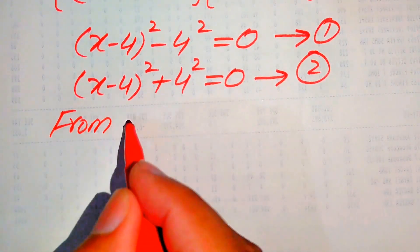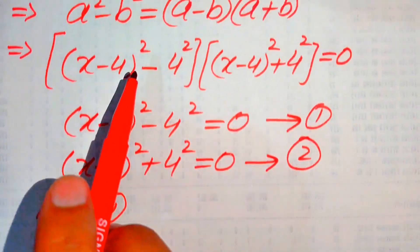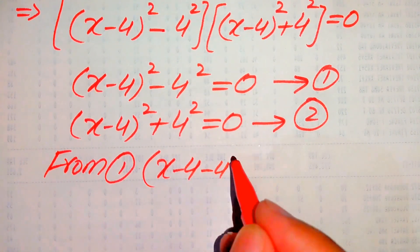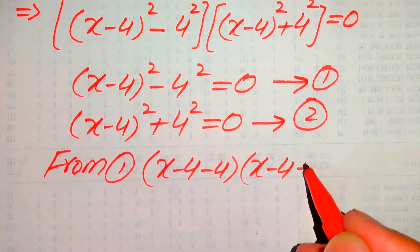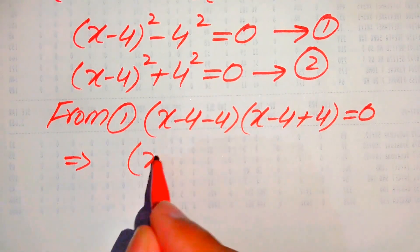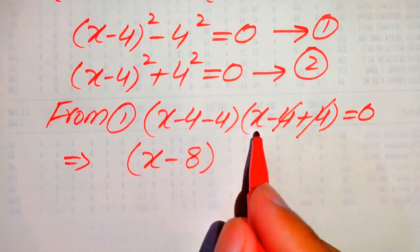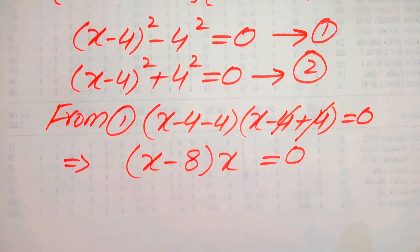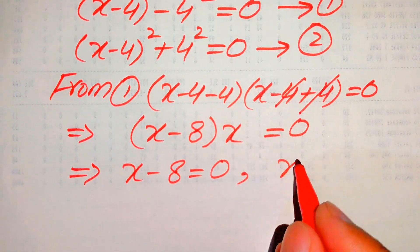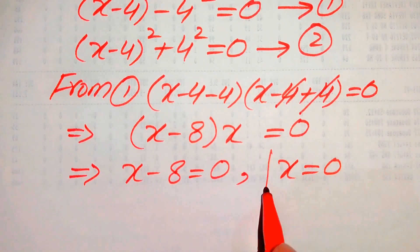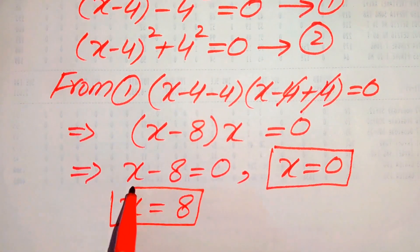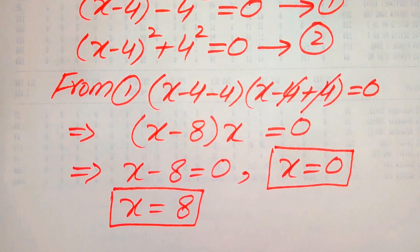From Equation 1, we apply the difference of squares formula again and write it as (x minus 4 minus 4)(x minus 4 plus 4) equals 0, which simplifies to (x minus 8)(x) equals 0. This gives us two cases: x minus 8 equals 0, so x equals 8, and x equals 0. These are the first and second real roots from Equation 1.